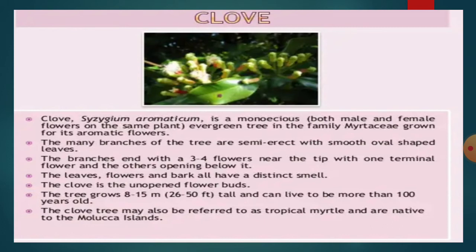At the tip of the branches, the flowers are arranged in a terminal cymose inflorescence. Each flower has an inferior ovary.